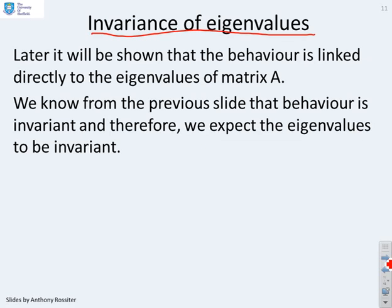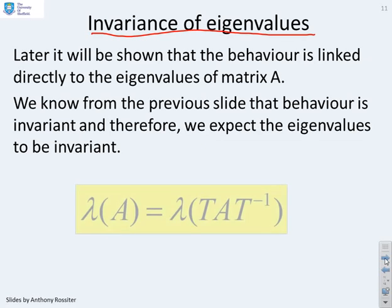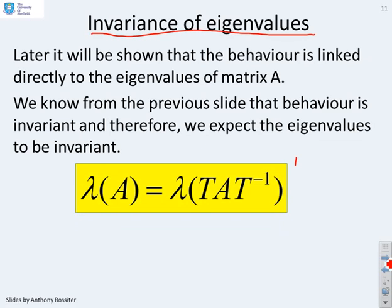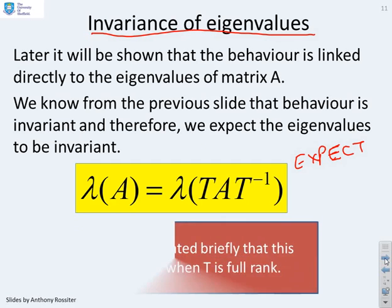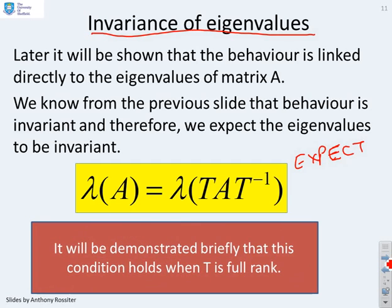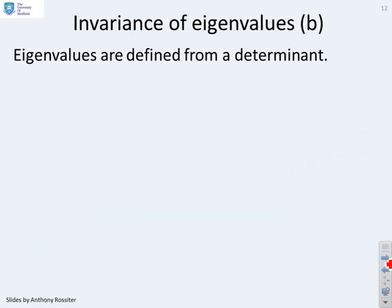Now, why is that important? It's useful later when we determine behaviours more explicitly, but it also tells us that the modes of behaviour from this model must match the modes of behaviour from this model. That comes down to the invariance of the eigenvalues, because the modes are governed by the eigenvalues. We know from the previous slide that behaviour is invariant, so we expect the eigenvalues to be invariant. We expect the eigenvalues of A to equal the eigenvalues of T A T inverse.